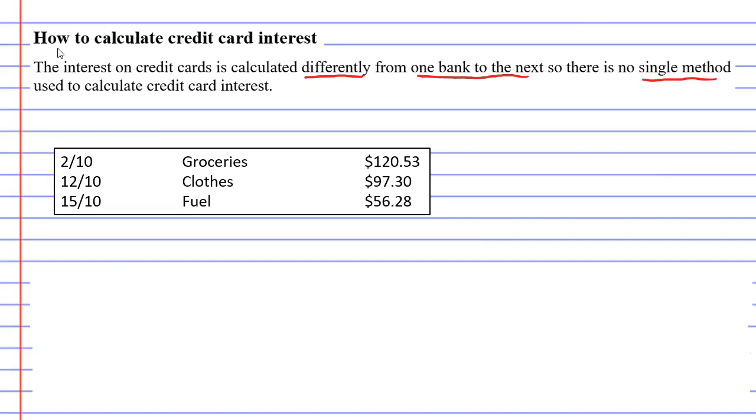To help you understand why banks calculate it differently, I've drawn up a little statement here. We'll say this statement covers the period from the 1st to the 31st of October.